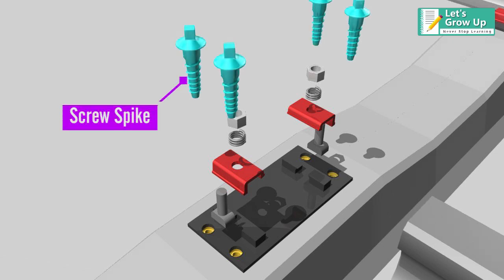Screw spike. Screw spikes are used to fasten tie plates to wooden sleepers. When it's used in concrete sleeper, it is often together with the plastic dowel.